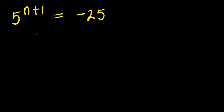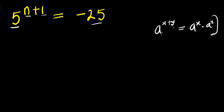Hello, how to solve this exponential problem: 5 power (n+1) equals negative 25. We are solving for the value of n that satisfies this equation. Using the property that a^(x+y) equals a^x times a^y, applying this here we get 5 power n times 5 power 1 equals negative 25.